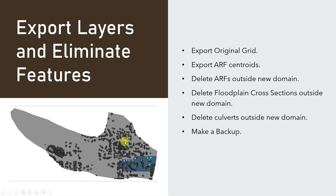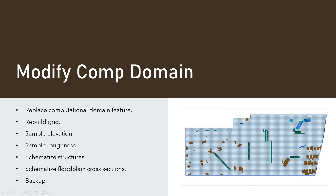Once everything is ready we need to eliminate data. We'll build a new grid and eliminate data from the old grid. We'll export the original grid, delete the ARFs outside the new domain, the cross sections outside the new domain, and the culverts outside the domain. Then we modify the computational domain, rebuild the grid, sample the elevation, sample the roughness, schematize the structures, schematize the floodplain cross sections, and make a backup.